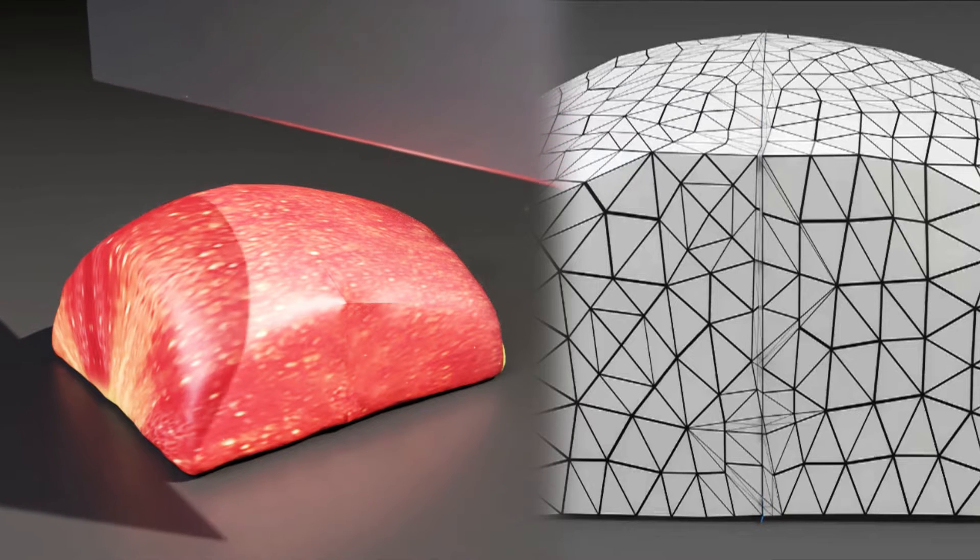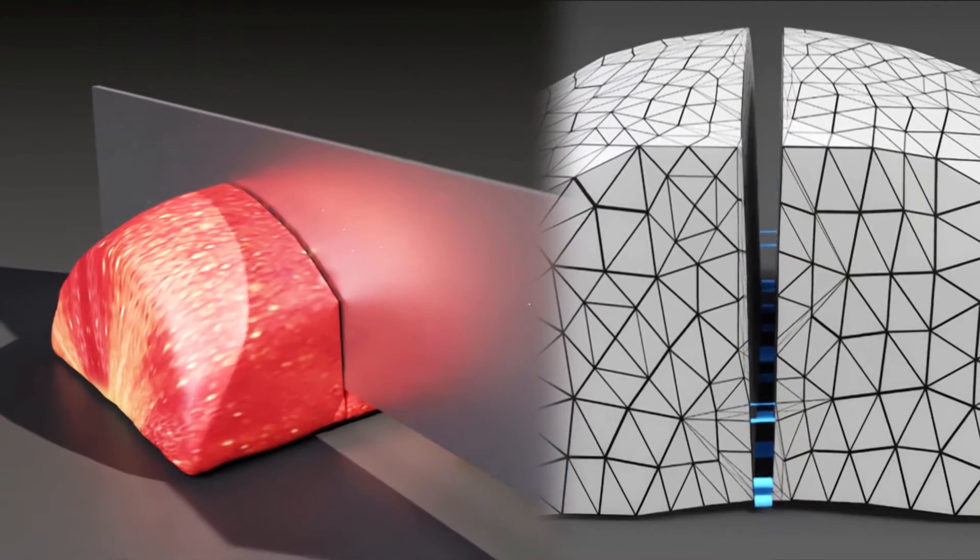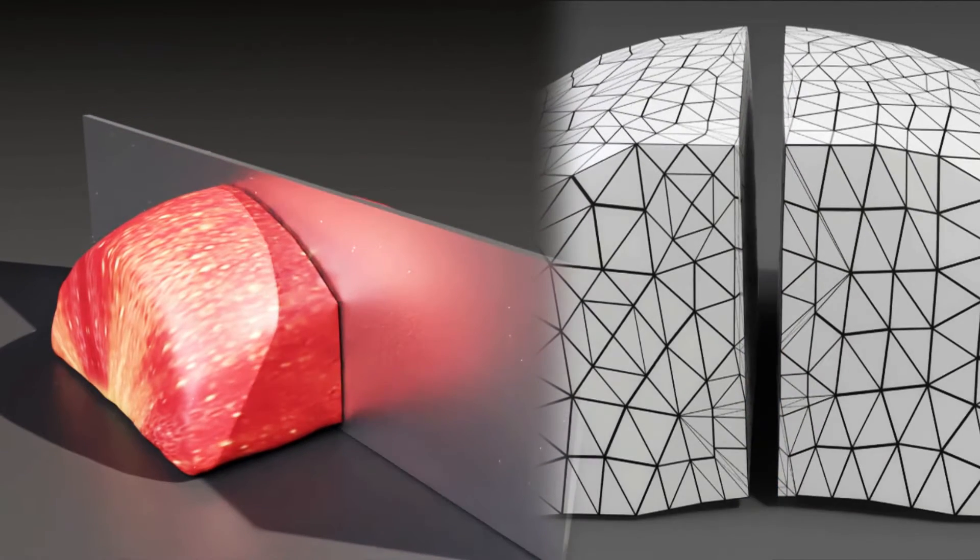As the knife exerts contact forces on the mesh, springs connecting the separate parts of the object are weakened over time, yielding a continuous model for damage mechanics.